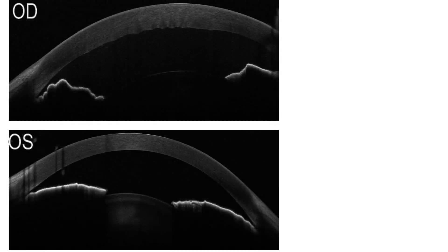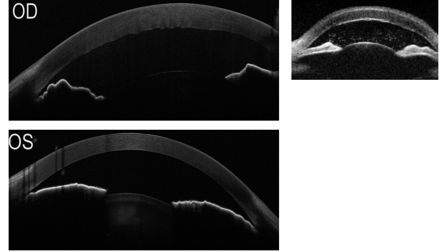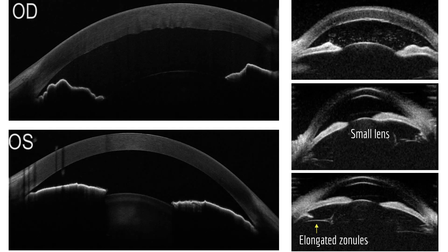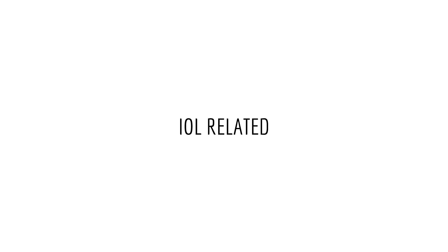This young male with high myopia presented with acute angle closure in both eyes. UBM shows a small spherophakic lens and elongated zonules. UBM is also helpful to identify the cause of IOP spikes post-cataract surgery.